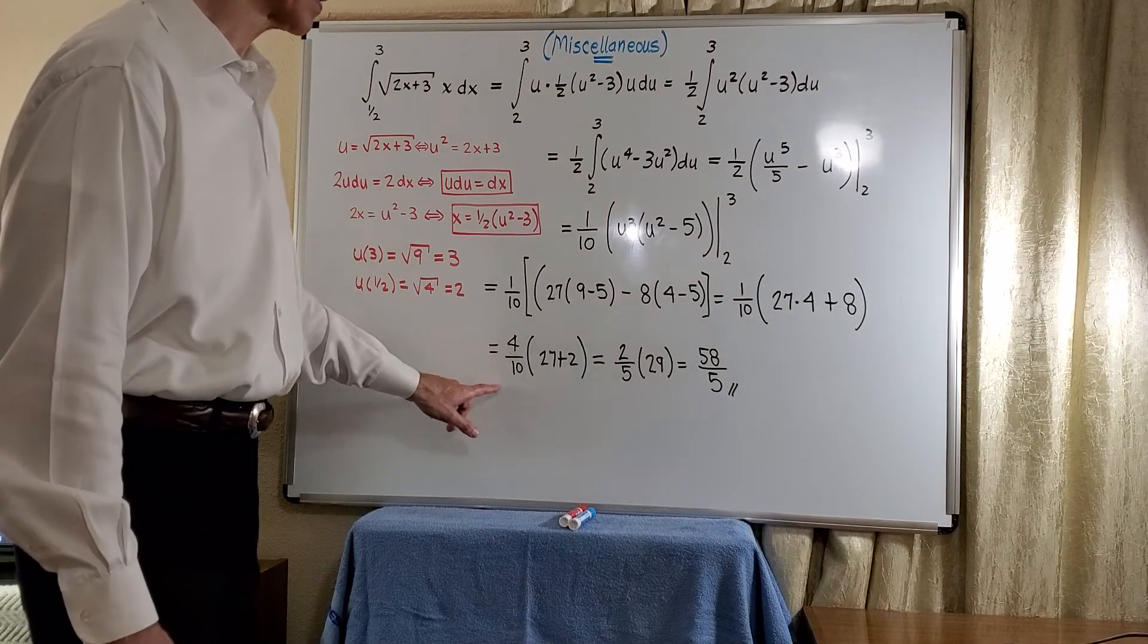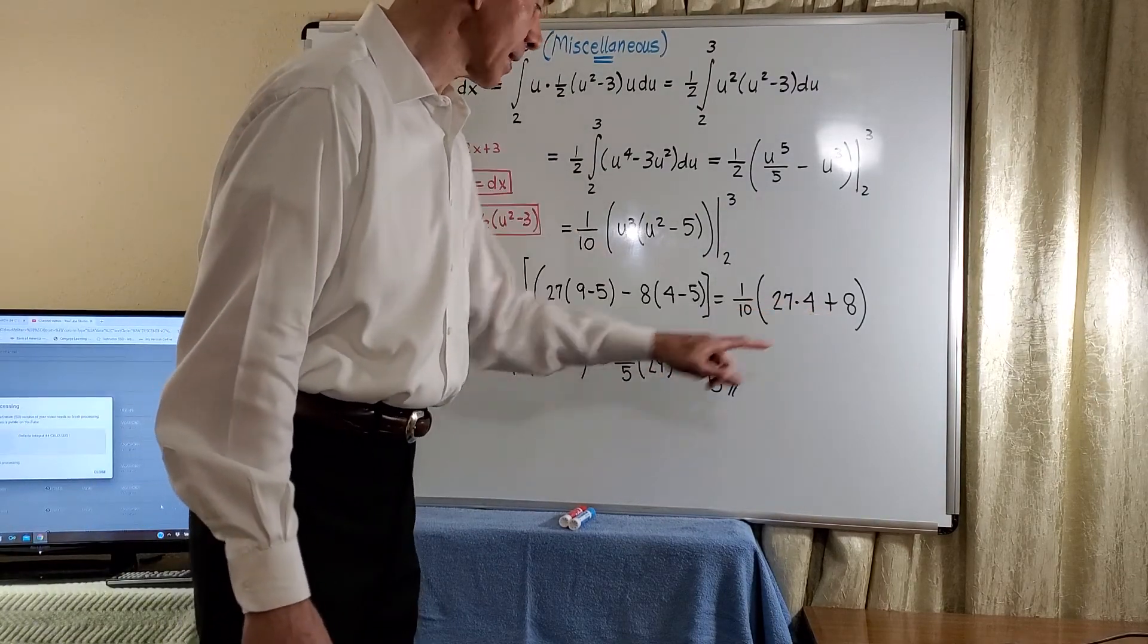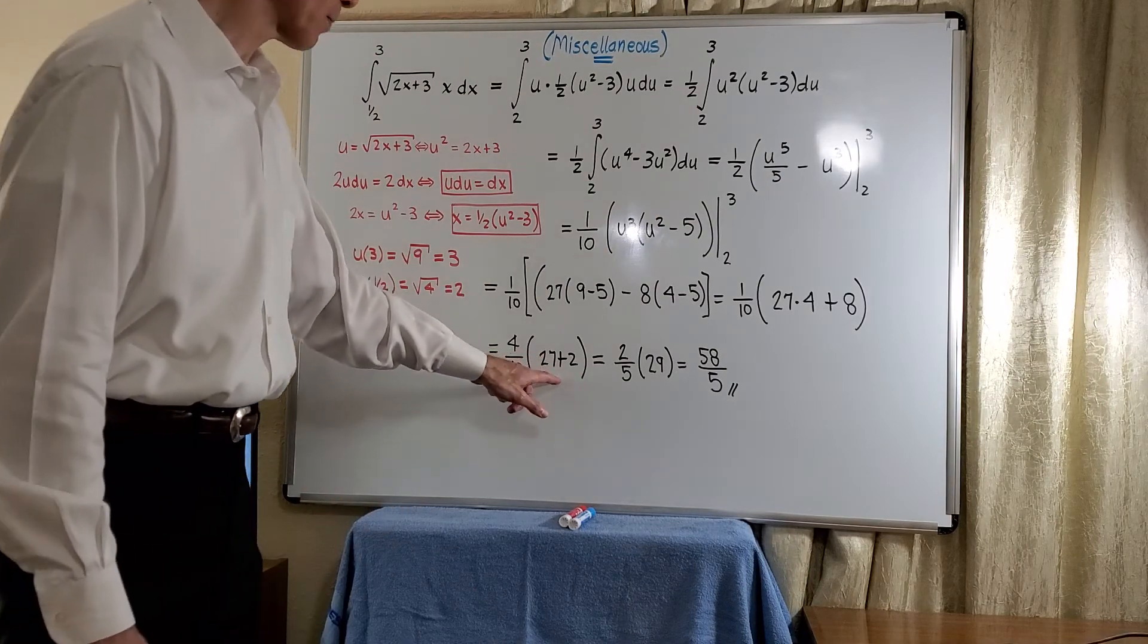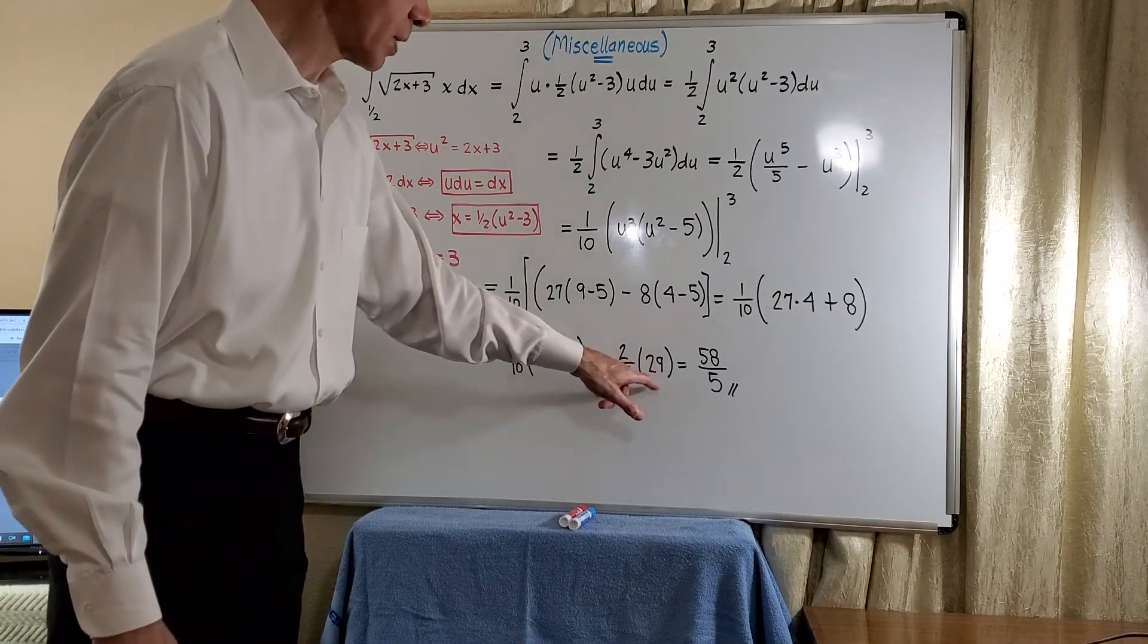So this will be a 4 over 10, at least behind a 27 and a 2 here. A 4 over 10 will reduce to 2/5. And then this 27 plus 2 will give us 29.